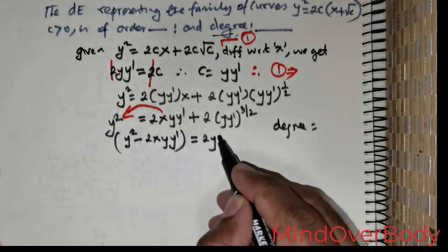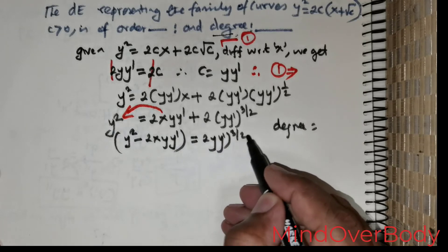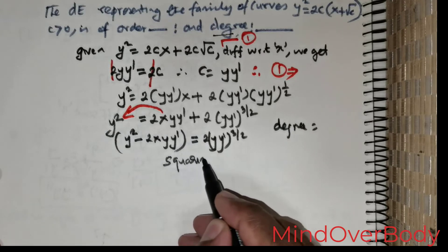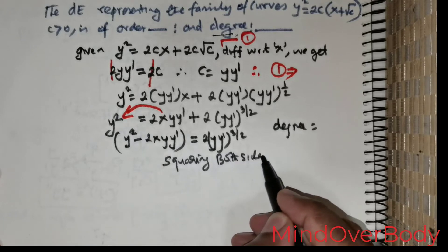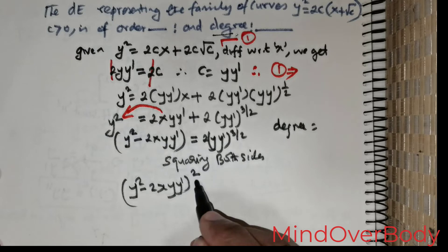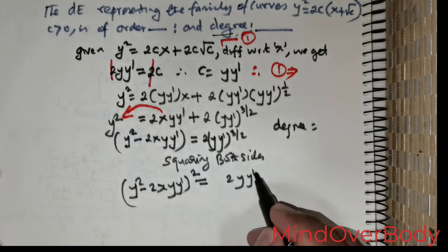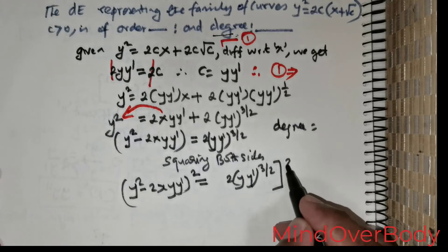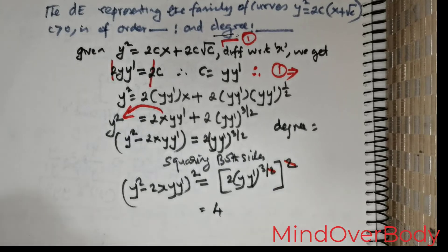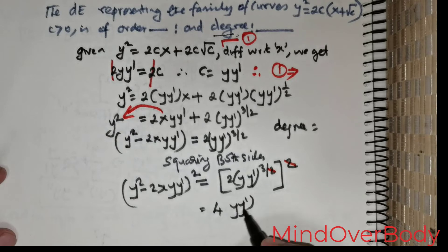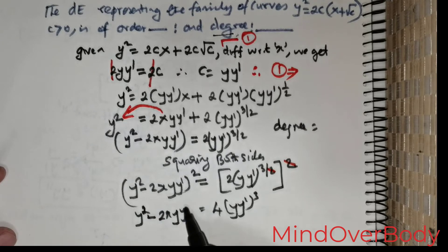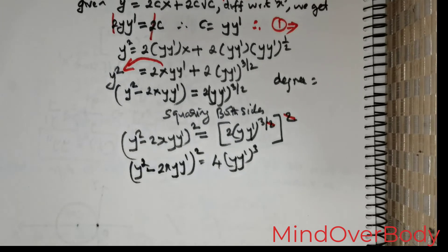Squaring both sides to eliminate the fractional exponent: (y² − 2x·y·y')² = 4·(y·y')³. Expanding the left side and simplifying: the 2² = 4 cancels with the coefficient on the right, giving (y² − 2x·y·y')² = 4·(y·y')³.